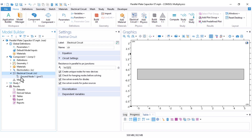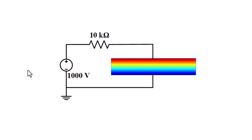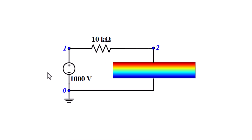I close Add Physics. Now I want to define the elements of my circuit. Let me review how the circuit is defined. I want a DC voltage source of 1000 volts in series with a 10 kilo-ohm resistor, and in series with that a capacitor — not a lumped capacitor, but the capacitor from the geometry domain. We define the three nodes: the ground node is zero, the node between the voltage source and resistor is named one, and the node between the resistor and capacitor is named two.